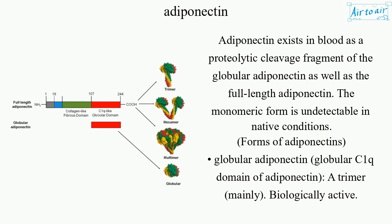Adiponectin exists in blood as a proteolytic cleavage fragment of the globular adiponectin, as well as the full-length adiponectin. The monomeric form is undetectable under native conditions.